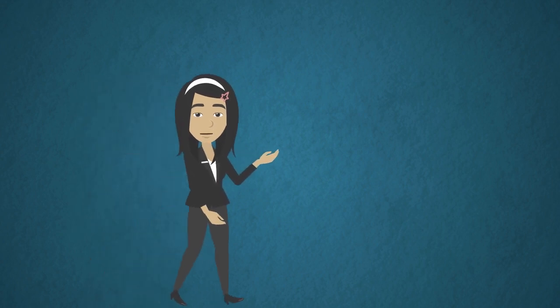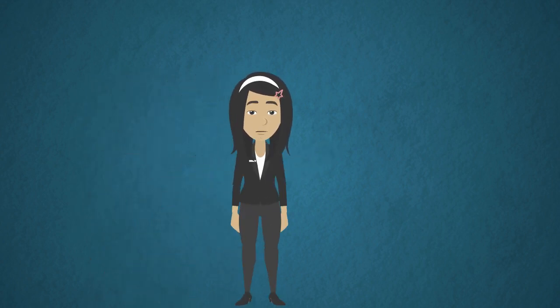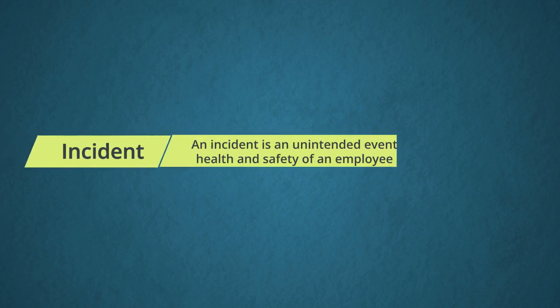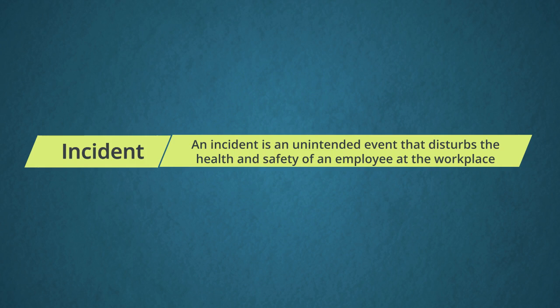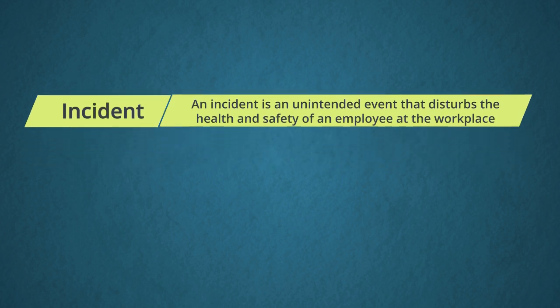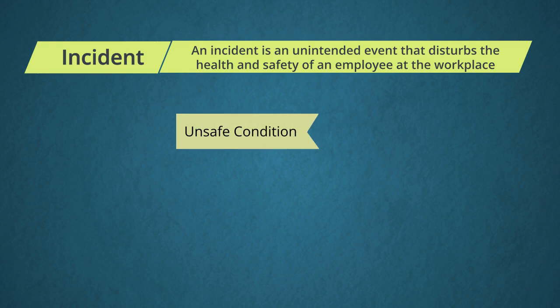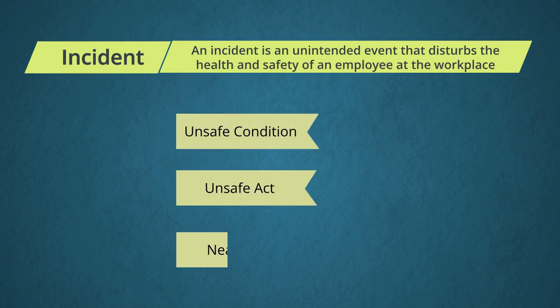To maintain safety at the workplace, there are certain measures to keep in mind. The first and most important is to report incidents. An incident is an unintended event that disturbs the health and safety of an employee at the workplace. Safety-related incidents can be caused due to primarily three reasons: unsafe conditions, unsafe acts, and near-miss incidents.